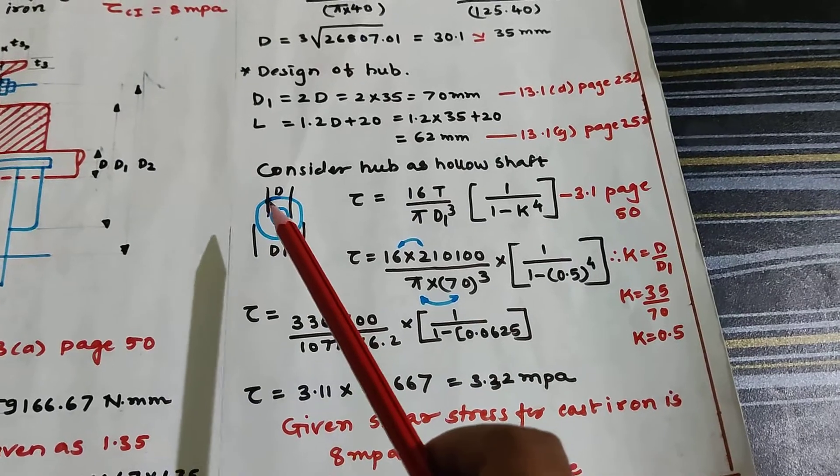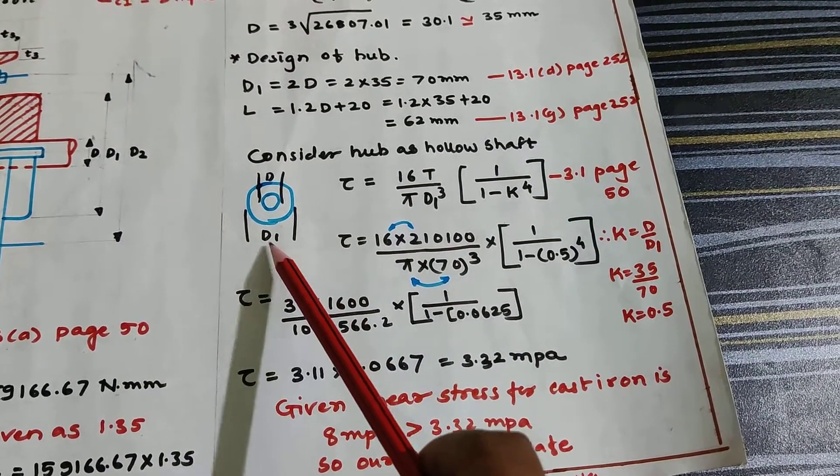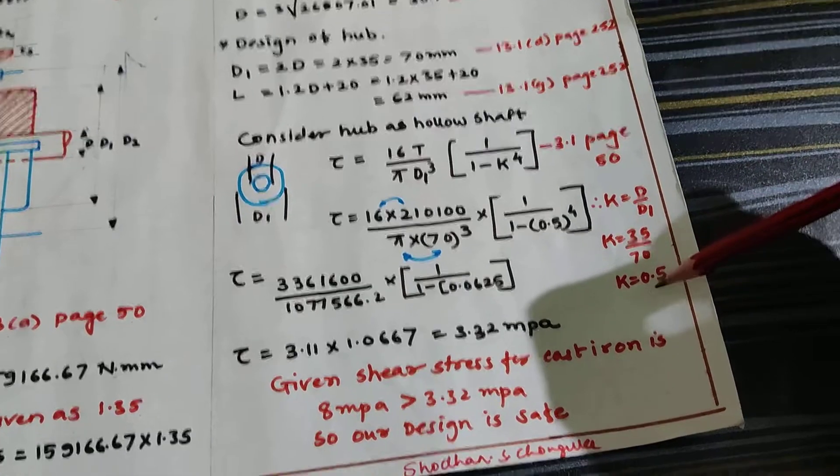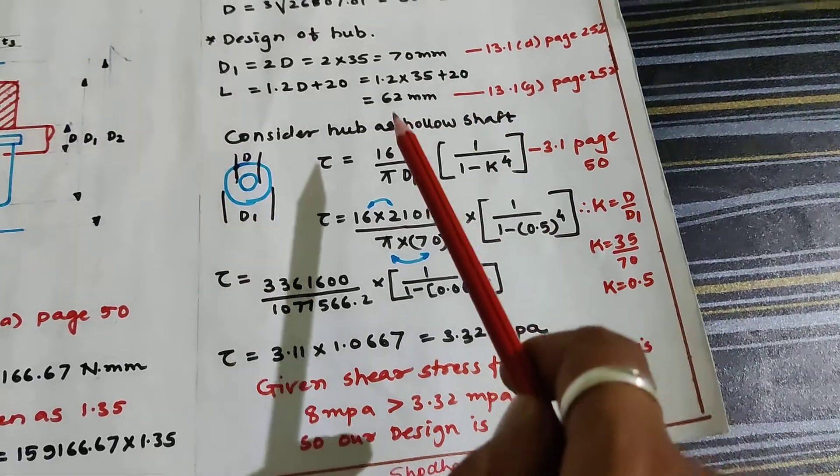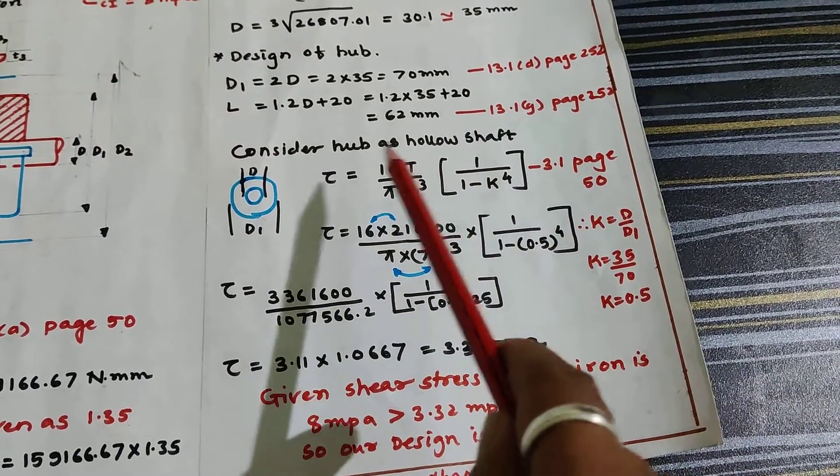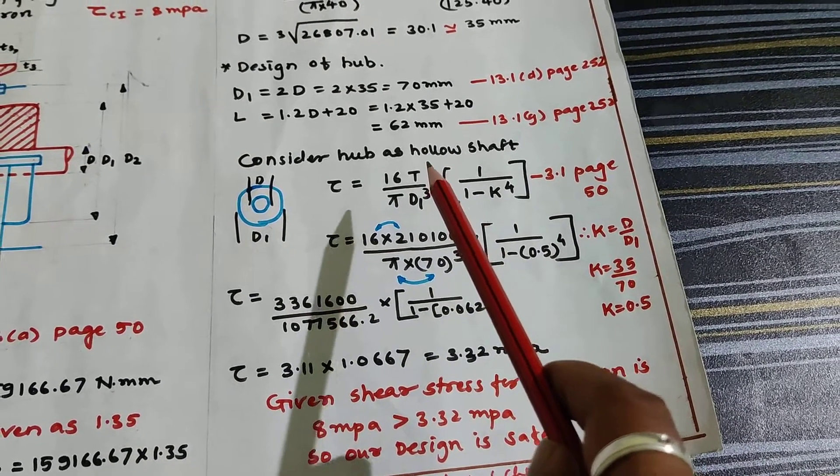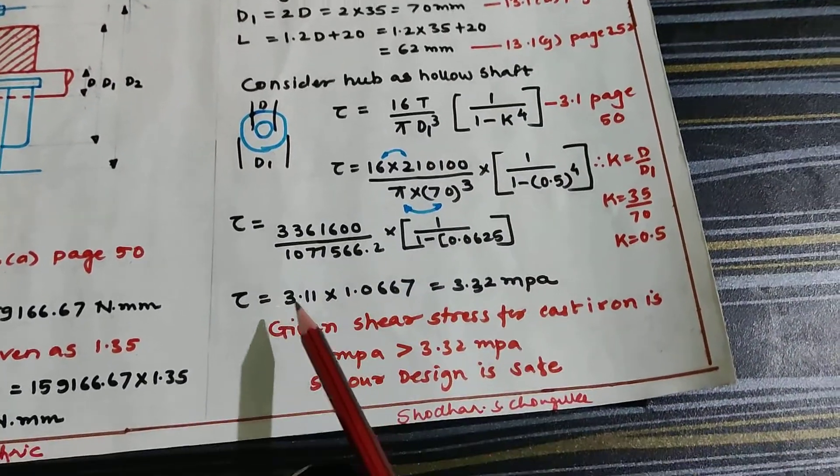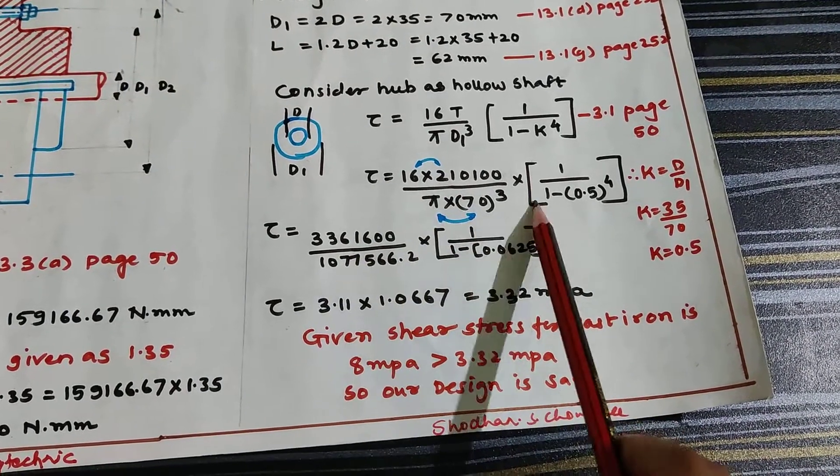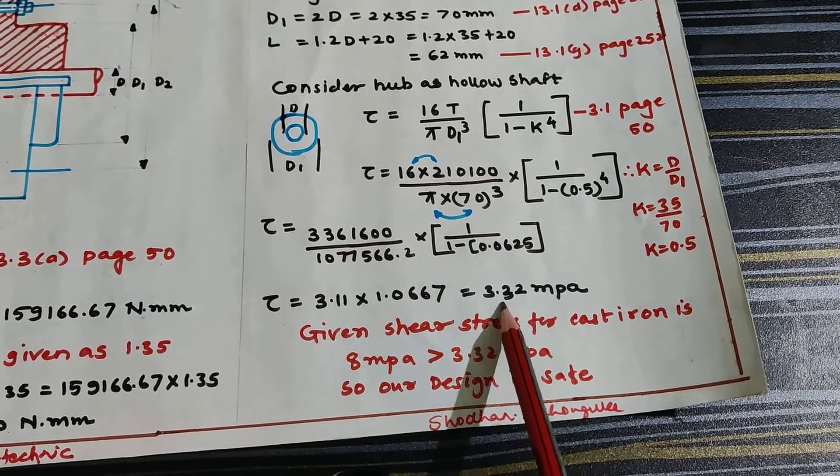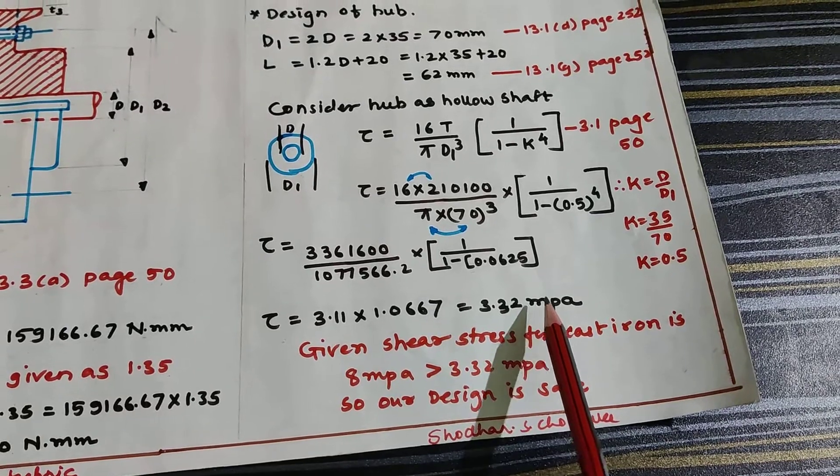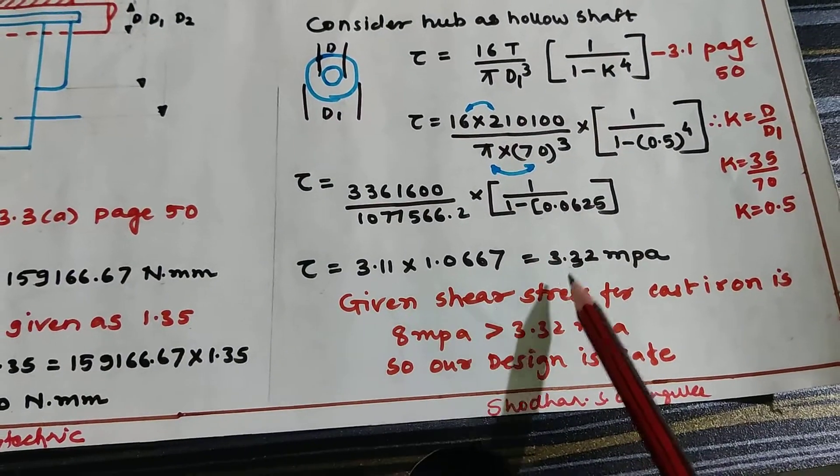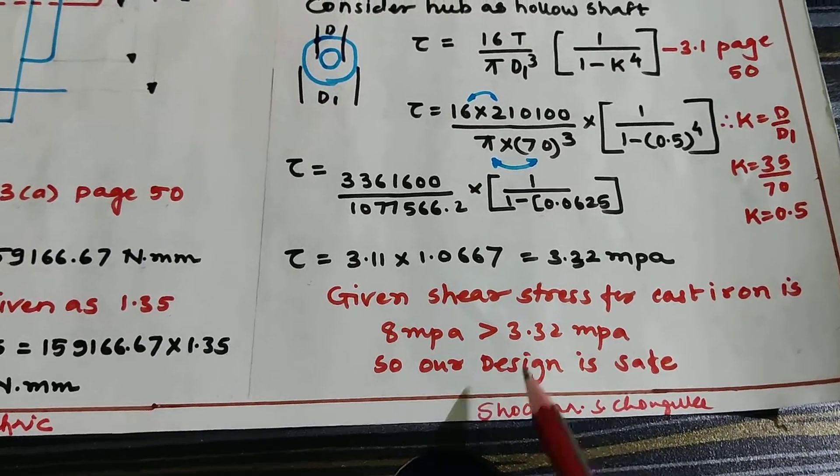Consider this as a hollow shaft. Inner diameter is diameter of the shaft D = 35, whereas D1 is 70, we will get K = 0.5. Now use formula 3.1 page number 50. We are checking if our shear stress is correct or safe. Substitute all values and find the shear stress. Stress value is 3.32 MPa for flange. It is given as 8 MPa shear stress for cast iron. Answer is 3.32 which is less than 8 MPa, so our design is safe.